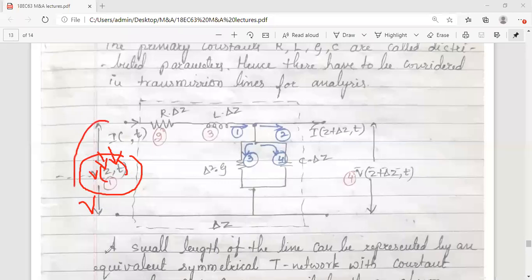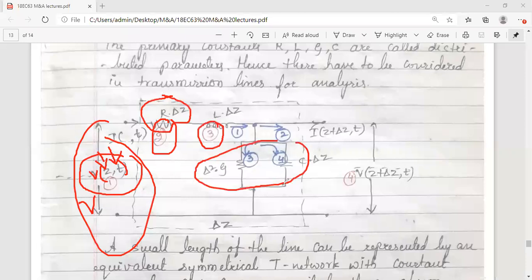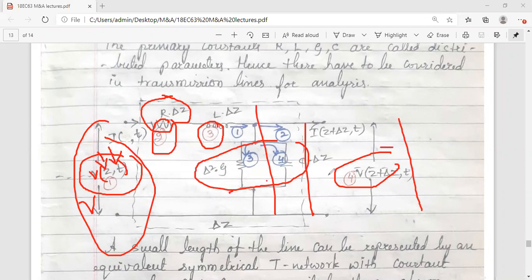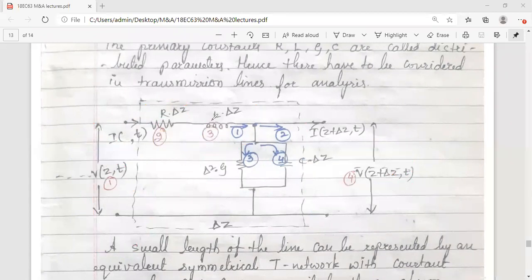That's why V of Z comma T is written. So this is the applied voltage, then you have here number two - whatever voltage comes across this has to be taken into consideration. Third is the inductor, and fourth - don't consider this parallel branch because for parallel, voltage remains same. Consider these four points. For these four points, try to apply the KVL.